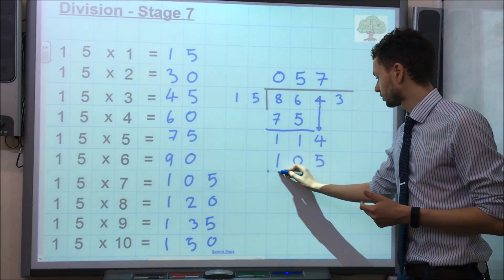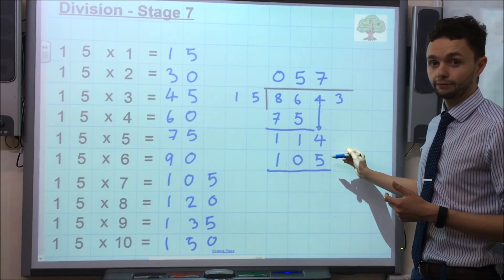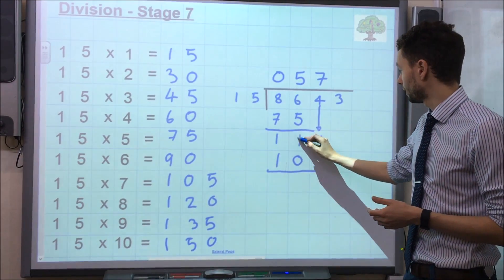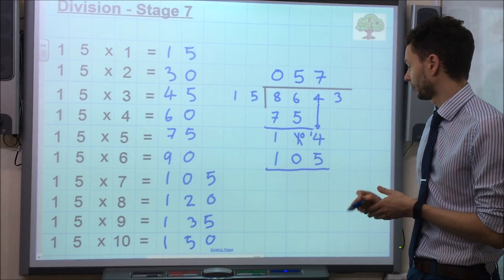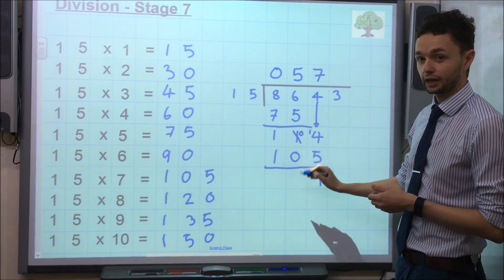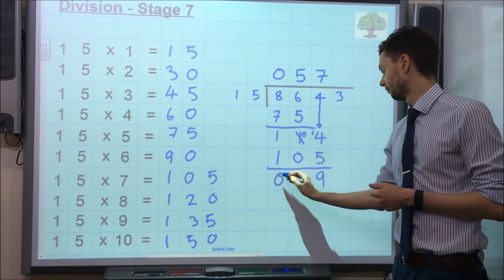Then, again, we subtract the numbers. So 4 take away 5, we can't do in this situation. So we're going to have to look at the 10s column and we're going to have to exchange the 10s over. 14 take away 5, that leaves us with 9. 0 take away 0 is 0. 1 take away 1 is 0.